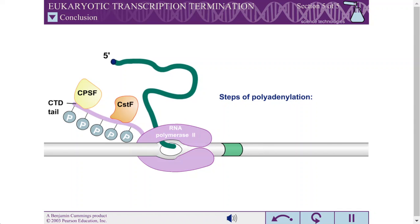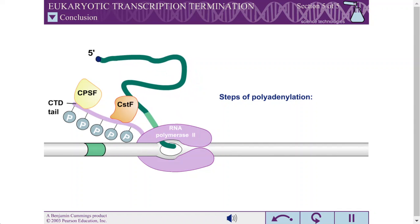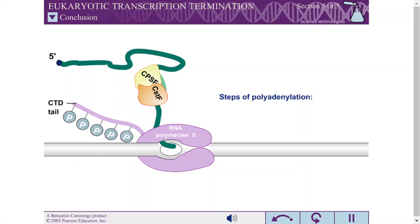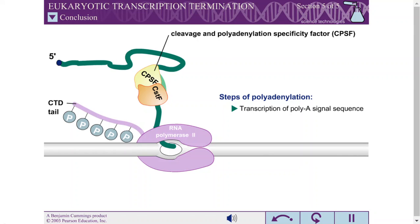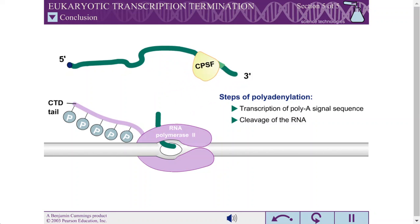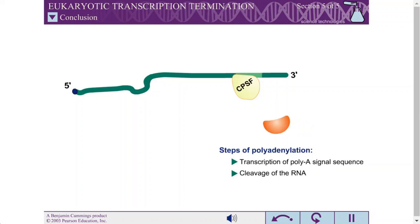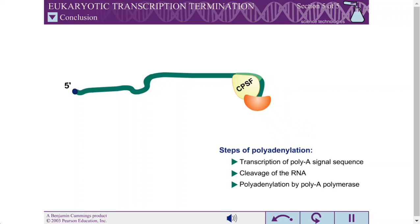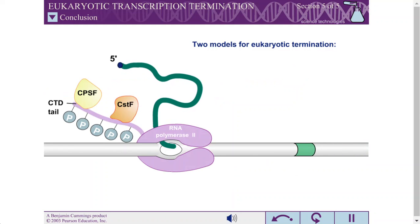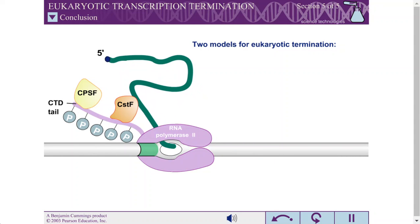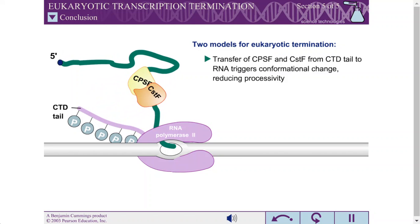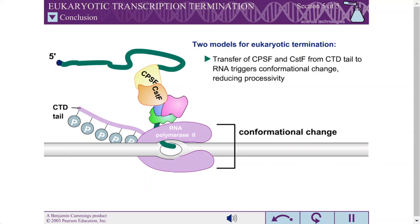Polyadenylation is the process whereby a long chain of adenines is added to the 3' end of a eukaryotic mRNA transcript during the termination phase of transcription. Polyadenylation involves several factors: the cleavage and polyadenylation specificity factor, the cleavage stimulation factor, and additional cleavage factors work together to cleave the RNA transcript after transcription of a polyA signal sequence. CPSF then recruits polyA polymerase, which catalyzes polyadenylation. In the first termination model, transfer of CPSF and CSTF from the polymerase CTD tail to the RNA triggers a conformational change in RNA polymerase, leading to dissociation.